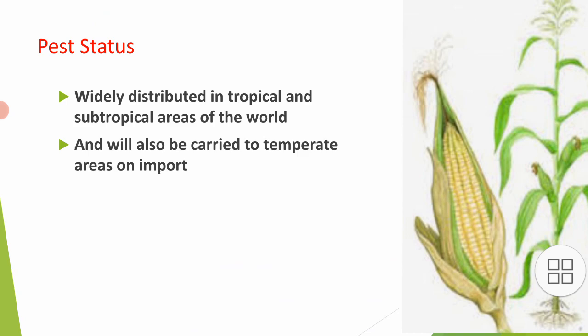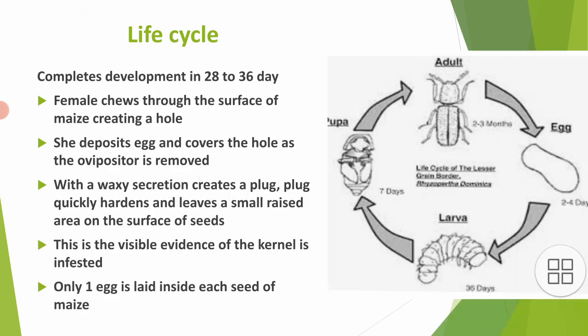If grains are imported from one country to another — for example, from India to China or China to any other country — they are likely to spread the pest across every sort of climate, including tropical, subtropical, and temperate regions.